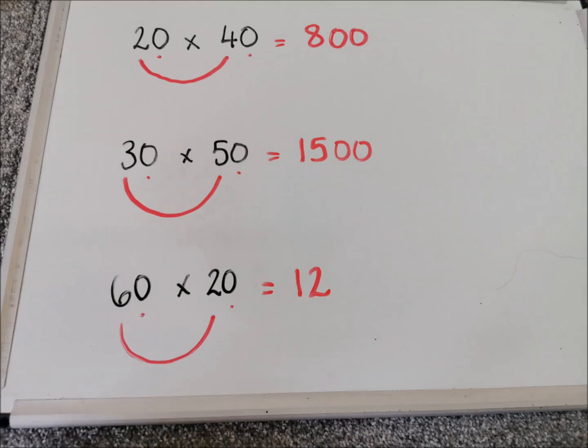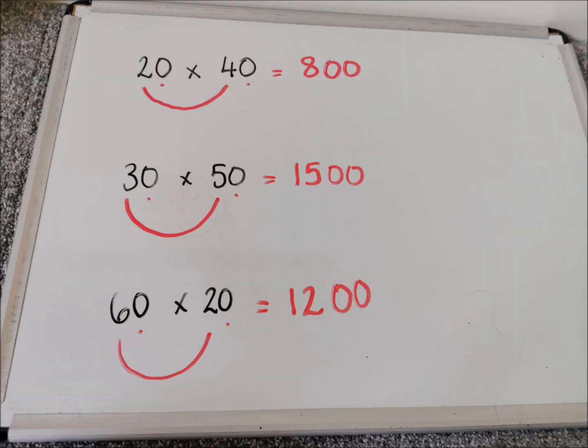And then I need to count the number of zeros in my question. Put the dots underneath them. So I've got two dots. So I need to add in two zeros to my answer. So my answer is 1200.